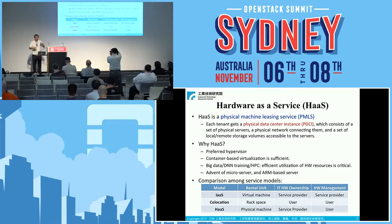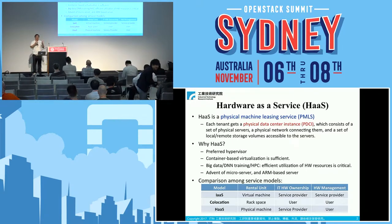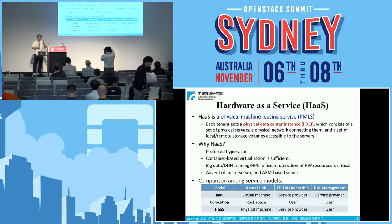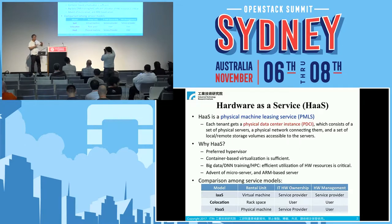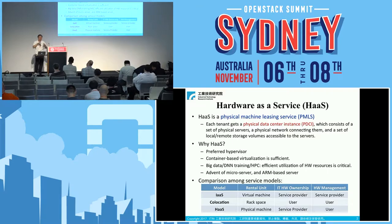Traditionally, we have IaaS service where the basic unit of rental is a virtual machine, and the IaaS service provider owns and manages the hardware. Then we have co-location, where the provider offers space, electricity, and network connectivity, and the basic unit is rack space — the user owns and manages the hardware. HaaS sits in between: the basic unit is a physical machine, the service provider owns the hardware, but the user rents and manages it.